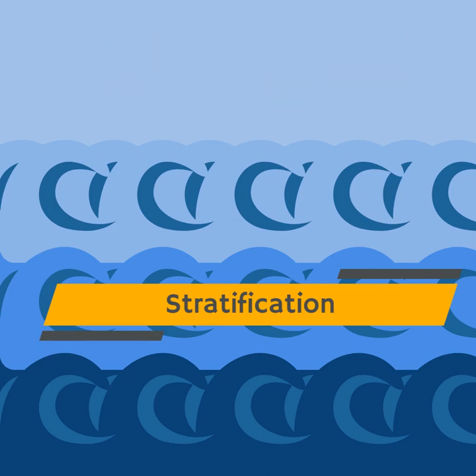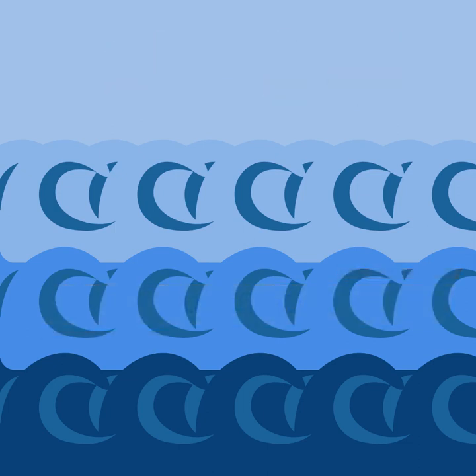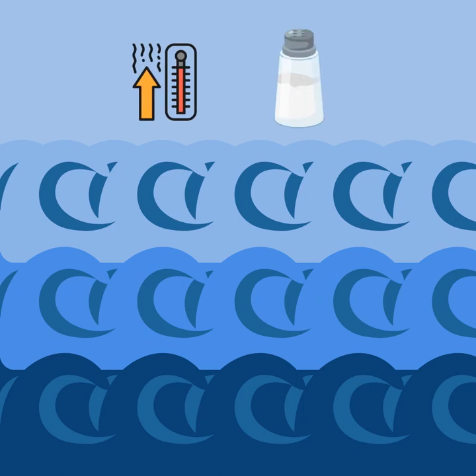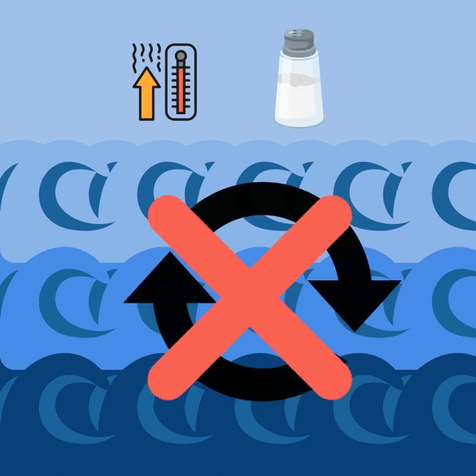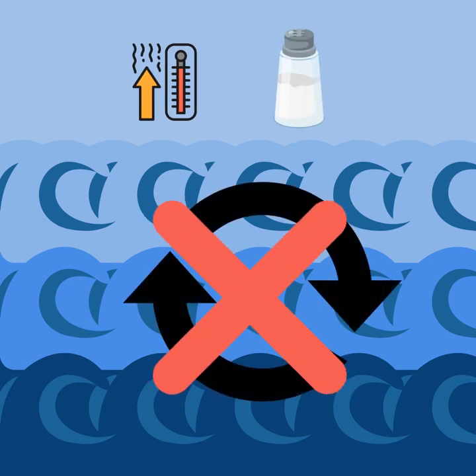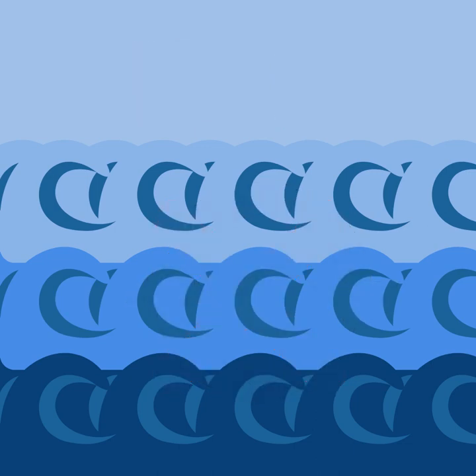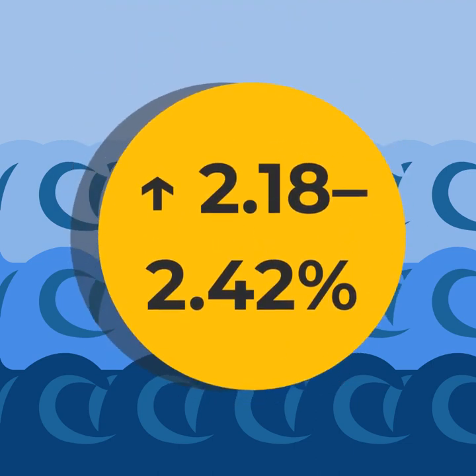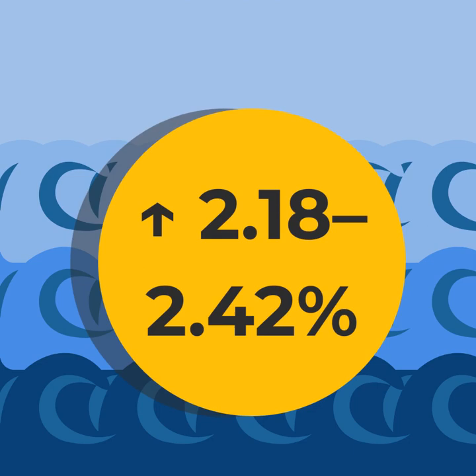This stratification is being caused by changes in the ocean's temperature and salinity, which limit vertical mixing, defining layers. Recent studies have indicated that stratification has increased by 2.18 to 2.42% since 1971.